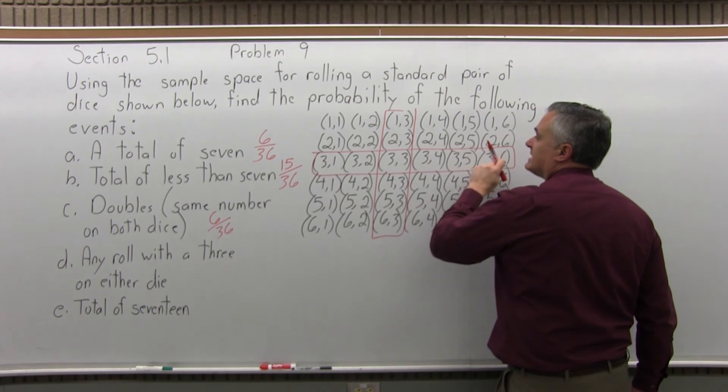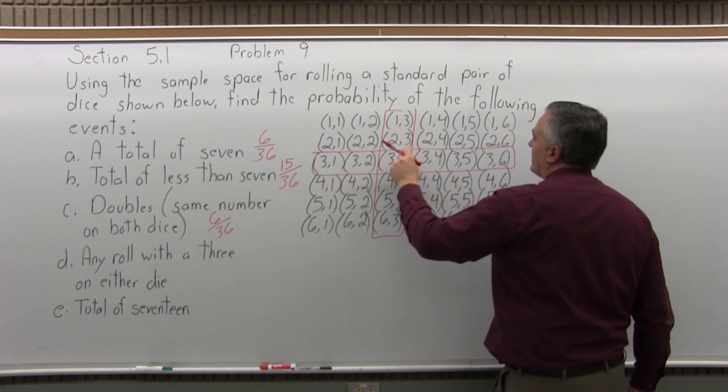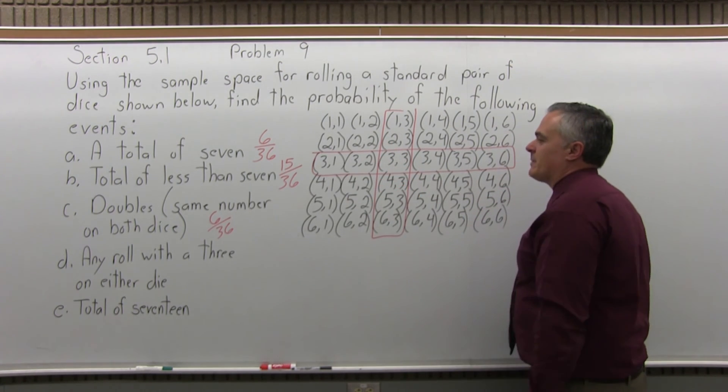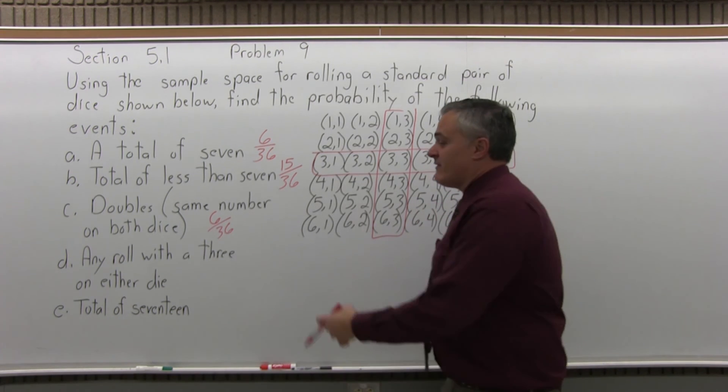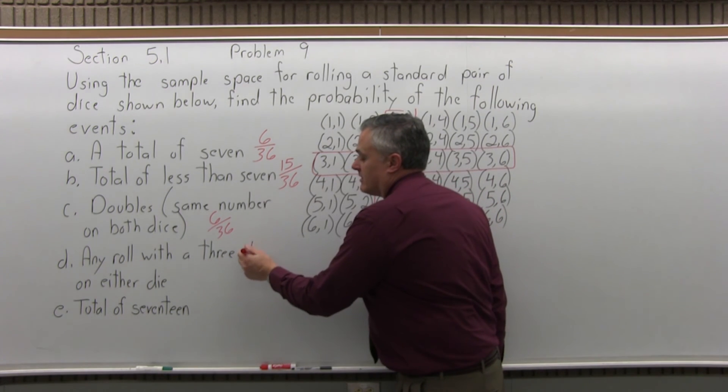1, 2, 3, 4, 5, 6, 7, 8. I already counted 3,3, you don't want to double count it. 9, 10, 11. There are 11 rolls out of 36 that have a 3 on either die. So 11 over 36.